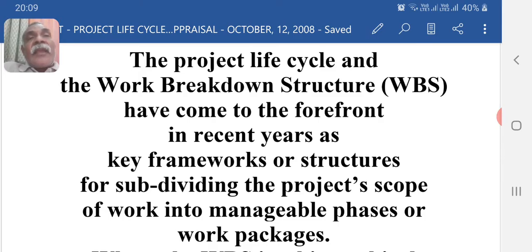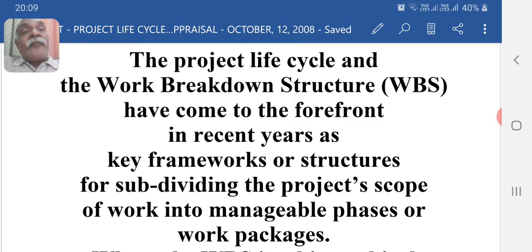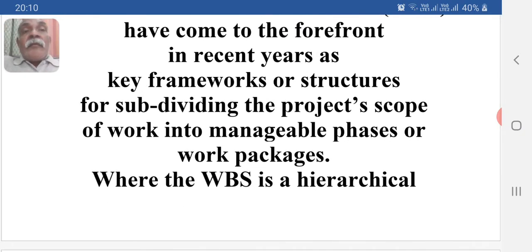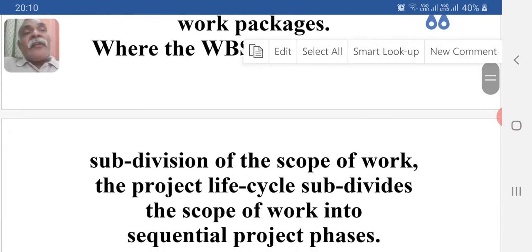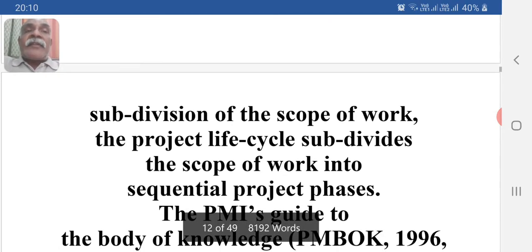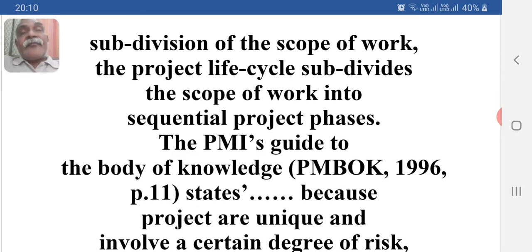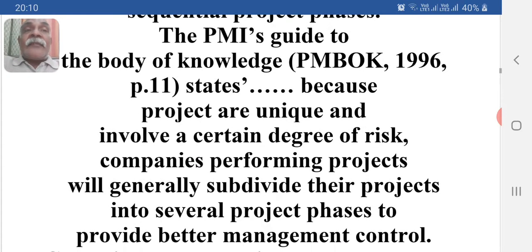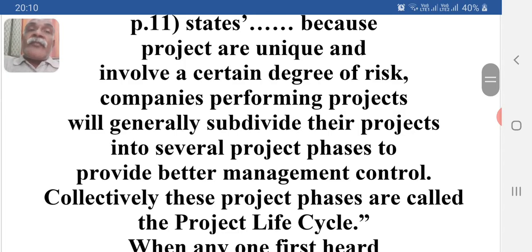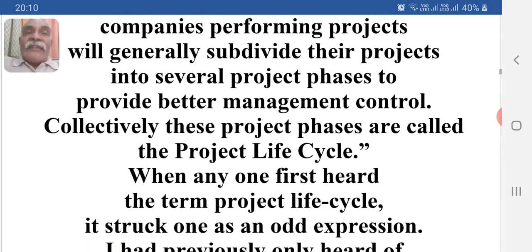The project life cycle and the work breakdown structure (WBS) have come to the forefront in recent years as key frameworks and structures for subdividing the project scope of work into manageable phases or work packages. The WBS is a hierarchical subdivision of the scope of work, while the project life cycle subdivides the scope of work into sequential project phases. PMI's guide to the body of knowledge states that because projects are unique and involve a certain degree of risk, companies performing projects will generally subdivide their projects into several project phases to provide better management control. Collectively, these project phases are called the project life cycle.